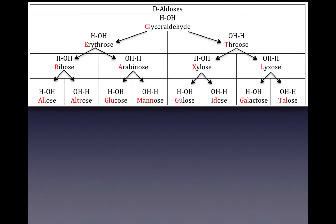We're going to start by doing an example with idose. Since we know it's going to have six carbons, let's go ahead and draw our line long enough. There's idose.